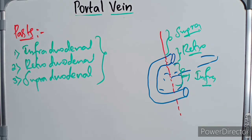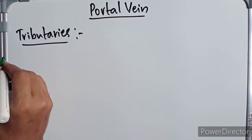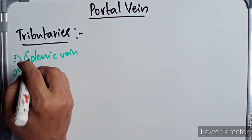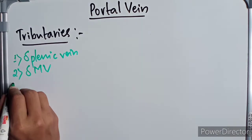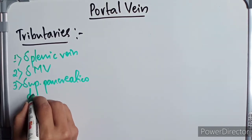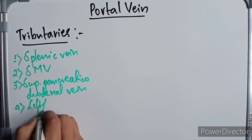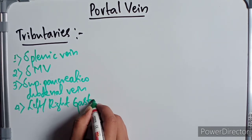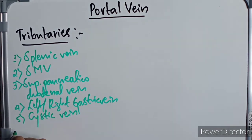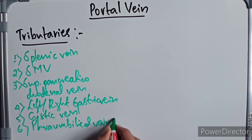Now let's look at the tributaries of the portal vein. The tributaries are: firstly the splenic vein, which is the larger tributary; the superior mesenteric vein; the superior pancreaticoduodenal vein; the left and right gastric veins; the cystic vein from the gallbladder; and finally the para-umbilical veins, which drain the anterior abdominal wall.